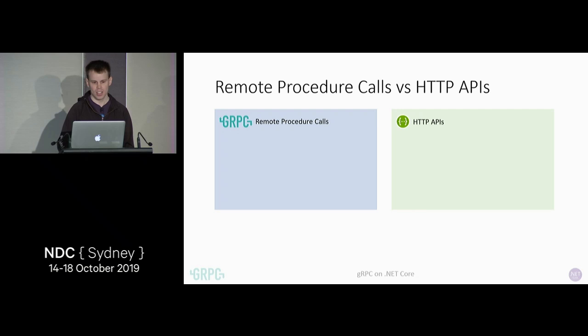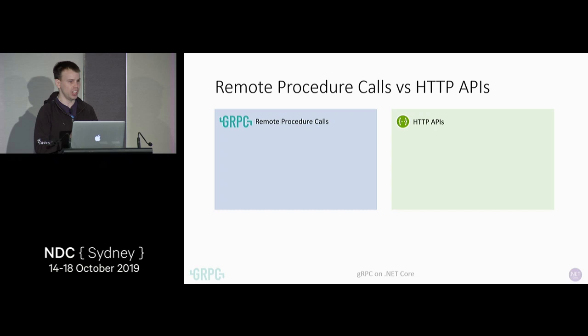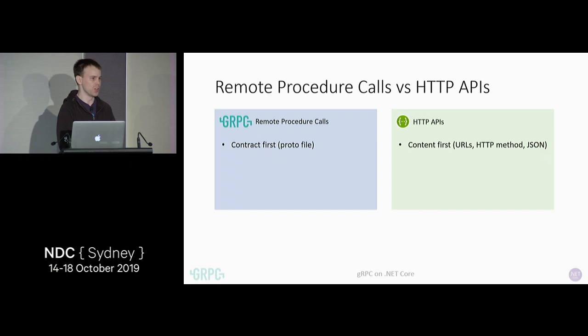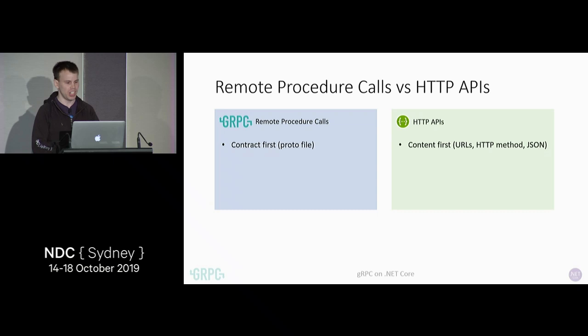Let's talk about the conceptual differences between remote procedure calls and HTTP APIs — that could mean REST or pretty much anything which is sent with HTTP plus JSON today. gRPC is an opinionated, contract-first technology. If we compare that to HTTP APIs, they're more about the content — you want to craft your JSON to look the way you want, you want to create user-friendly URLs that people can read and understand. With gRPC, it's the contract that matters more than what gets sent across the wire.